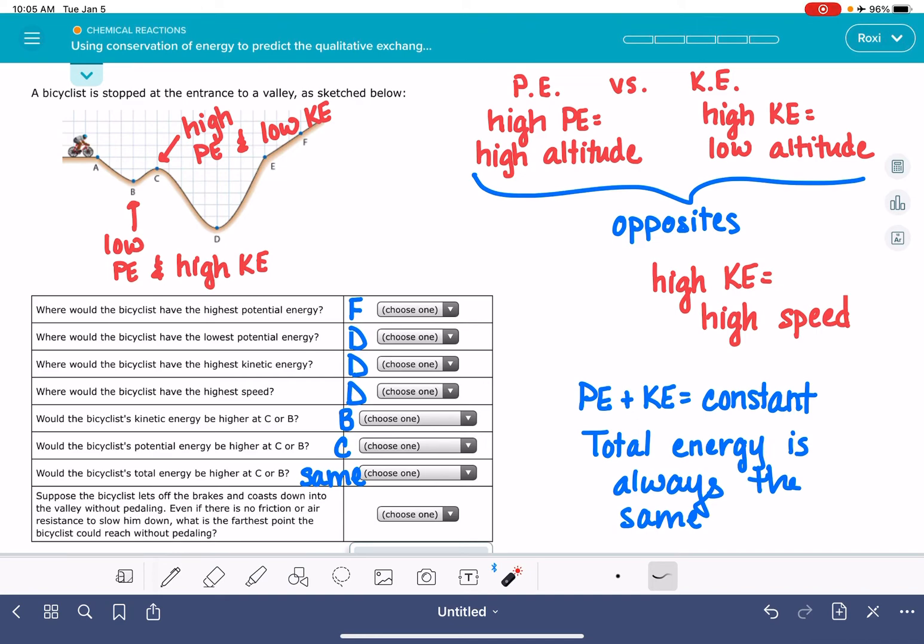And then the last question says, we're starting at point A, let off the brakes and coast down into the valley without pedaling. If there was no friction or air resistance, what's the farthest point that the bicyclist would go? In reality, because of friction and resistance, if you were coasting down this hill, you'd probably make it around here and then roll back down.